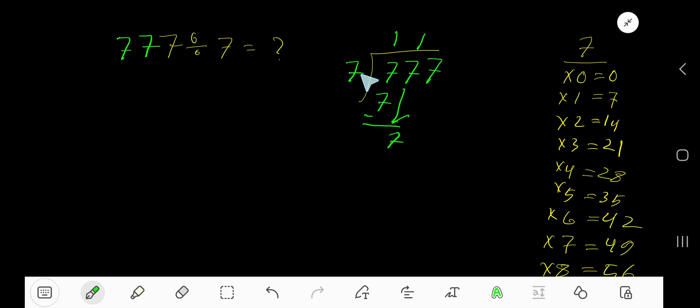One time again. 1 times 7 is 7, subtract to get 0. Bring down the last 7. 7 goes into 7 one more time. 1 times 7 is 7, subtract 0. So 111 is our answer.